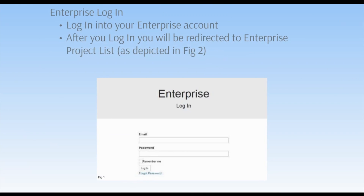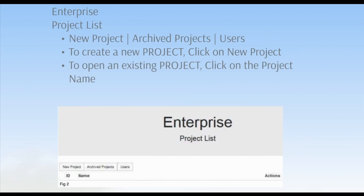First, sign into your Enterprise account. Once you're logged in, it's time to access your work. You will be directed to your project list. Then you can either start a new project by clicking on New Project, or you can open an existing project by clicking on Archived Projects. Then select your project from the project list. That's all you need to do to access your ongoing work.